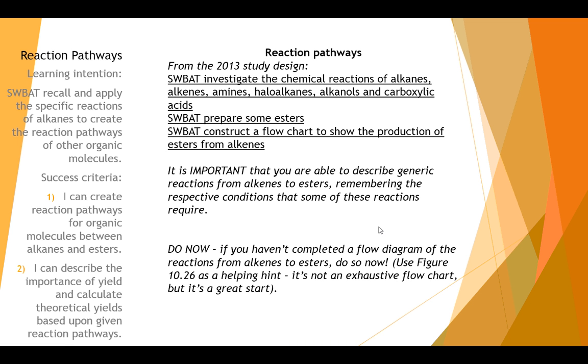So here's what I want you to do first. On the previous class, I asked you to do a flow chart of all the reactions between alkanes and esters. So you should have a flow chart done by now. And if you haven't done that yet, I want you to pause the video, go back to the previous one, the previous class, and actually do that task. Draw up a map of the different reactions between alkanes to esters. They can be generic. You can use figure 10.26 as a guide, but I want you to do one that accounts for everything that's on here. Reactions of alkanes, alkenes, amines, haloalkanes, alkanols, and carboxylic acids, and esters. Do that flow chart now, and then move on from here. Otherwise, this is going to be very confusing.